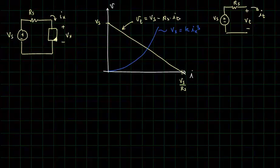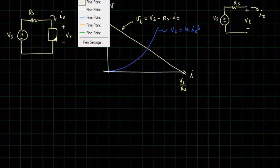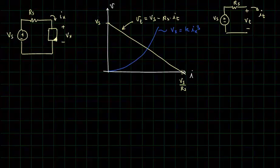And then we've also plotted the VI characteristic of this nonlinear element, which we've chosen a cubic relationship between voltage and current. So, here's the approach.